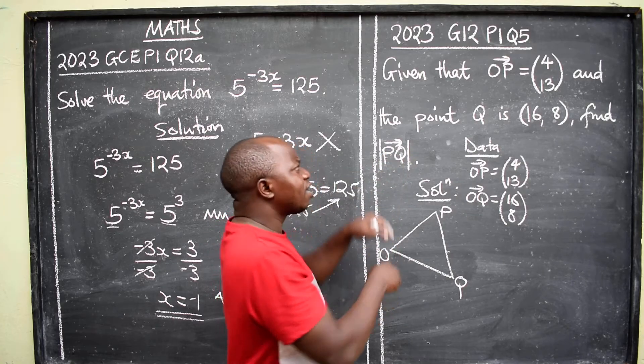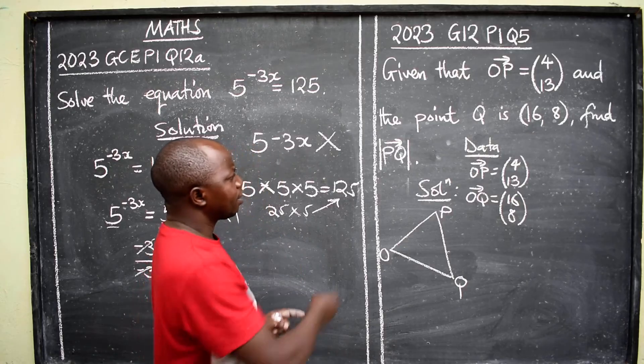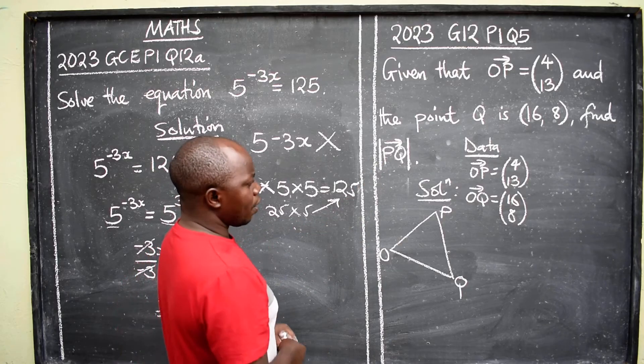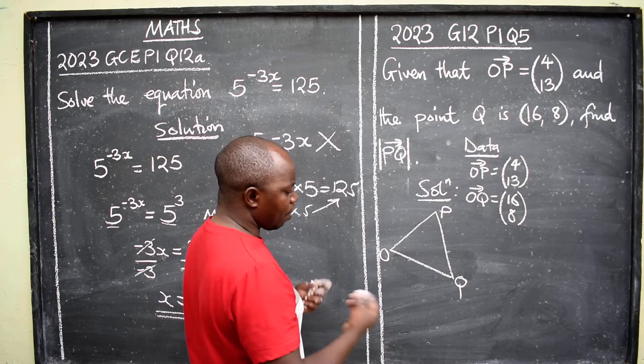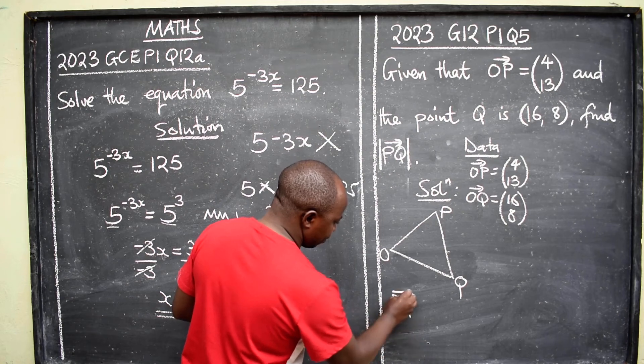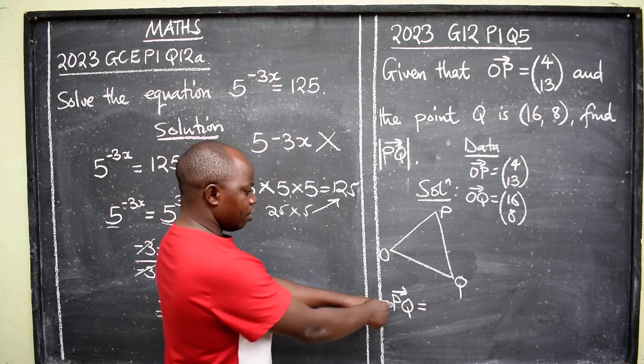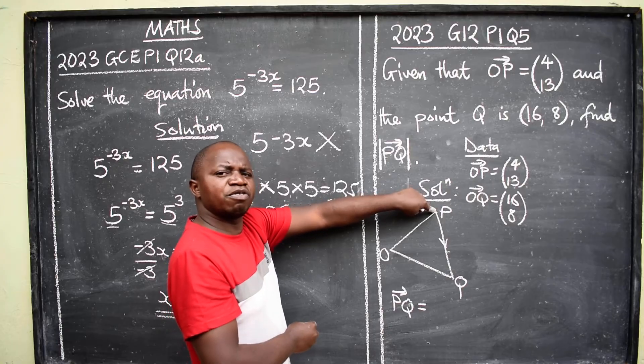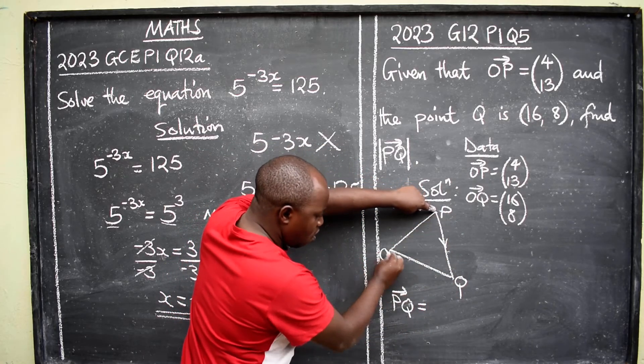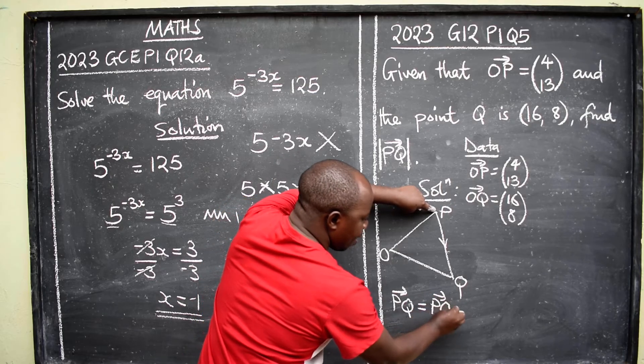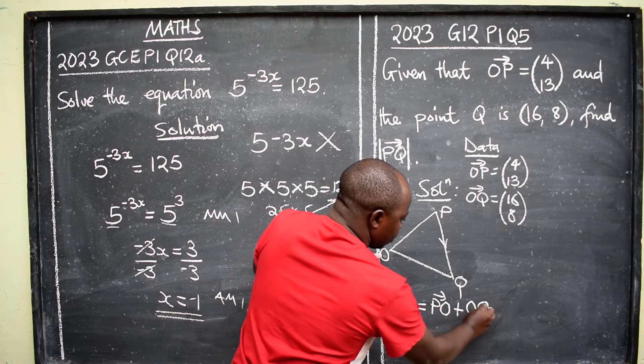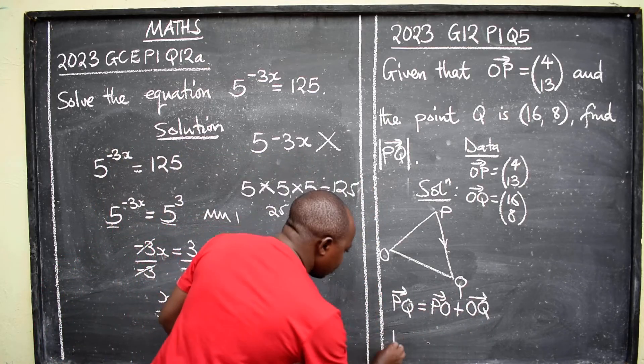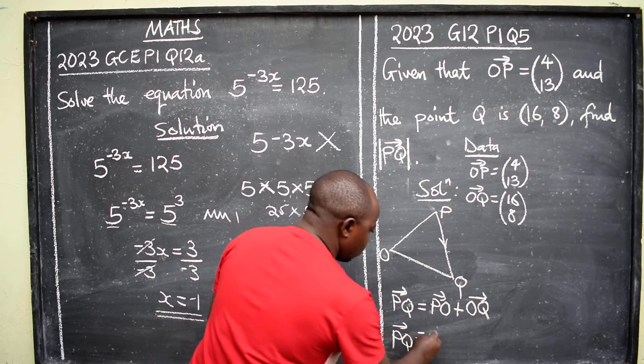So we are going to find PQ first, then the magnitude. The lines here, these two, mean magnitude or size of the vector PQ. Well, let's come here. We want PQ, how are we going to move? So we are going to say PQ will be equal to P to Q. We are here P to Q, so it will be in this direction. From P to Q, we are going to say PO plus OQ like this. That is the movement.